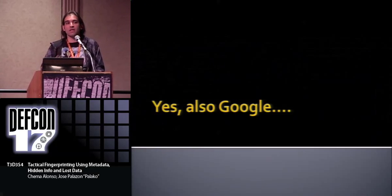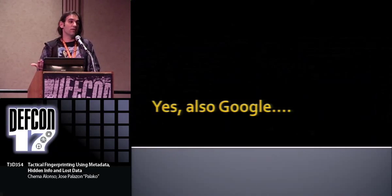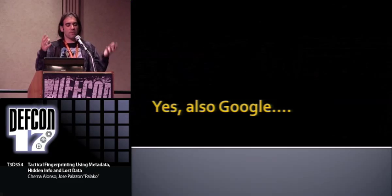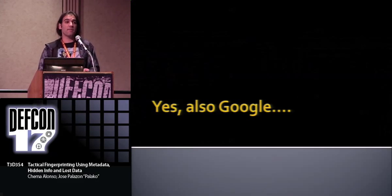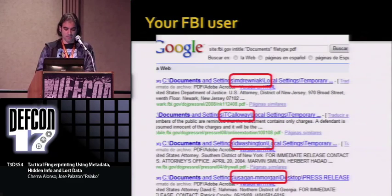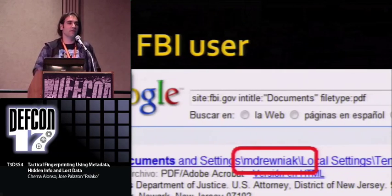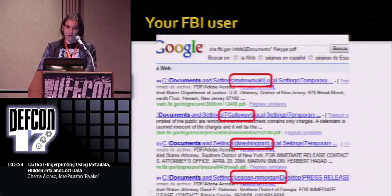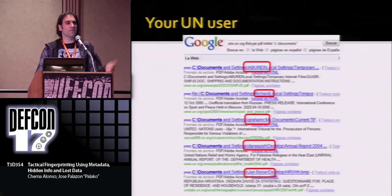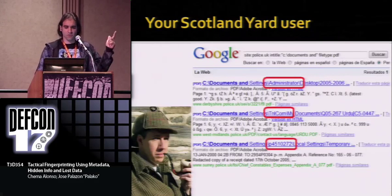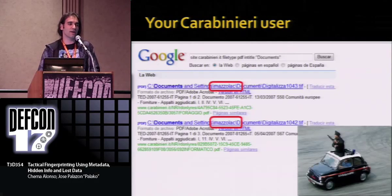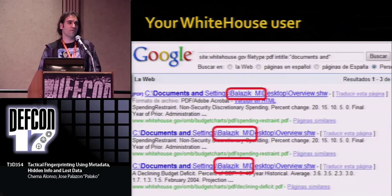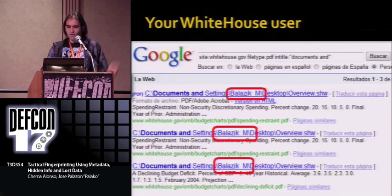Of course, you don't even need a tool — you can just use Google, because as Palako said, Google has its own metadata. So we can discover an FBI user just by searching Google for specific document details, and you can see the users. You can find a user from the United Nations, Scotland Yard, the Carabinieri — remember, not American cars in Italy — and of course a user from the White House. No, you have to be kidding me. No, it's true. Can we get users from the White House? Yes, we can, of course.